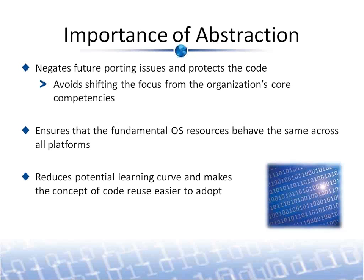It also ensures that the fundamental OS resources behave the same across all platforms. The features offered by operating systems differ greatly. In addition, the way applications utilize the services offered by operating systems greatly differs. These issues are solved through abstraction, providing software portability across operating systems. Abstraction also reduces the potential learning curve across operating systems by introducing a single API set for multiple operating systems and makes the concept of code reuse easier to adopt.